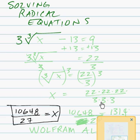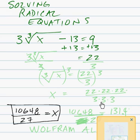3 to the third root of x minus 13 equals 9. The first thing, let's get rid of that 13. So we'll add 13 to both sides, giving us 22. So we have 3 to the cube root of x equals 22.